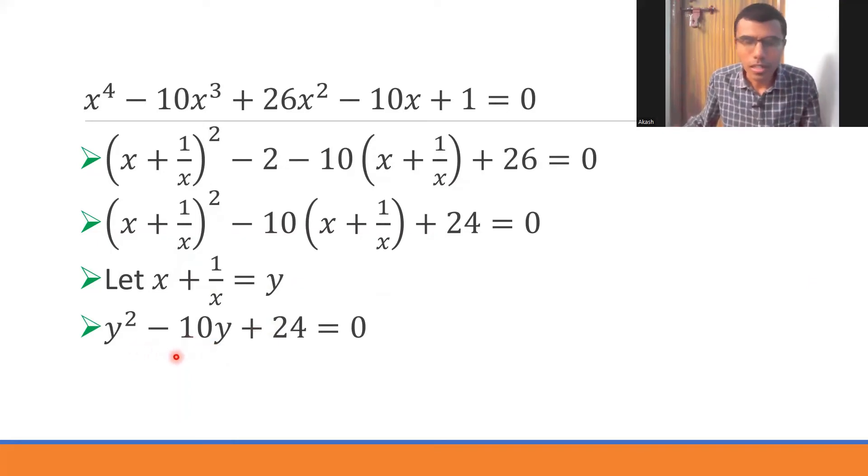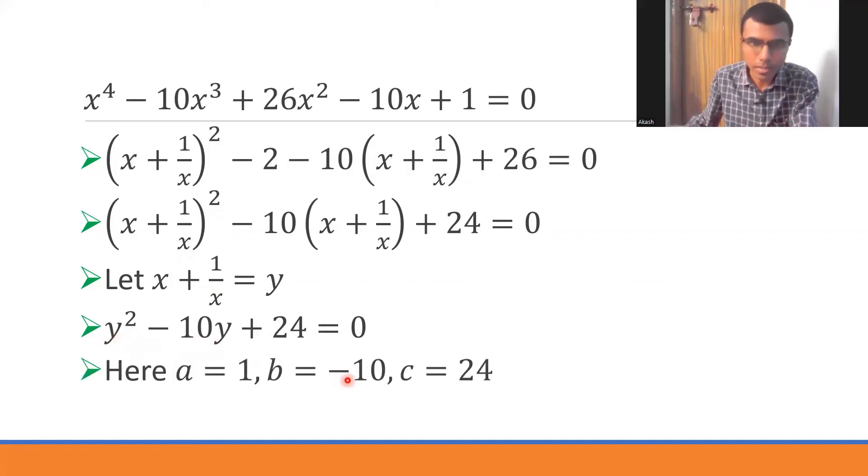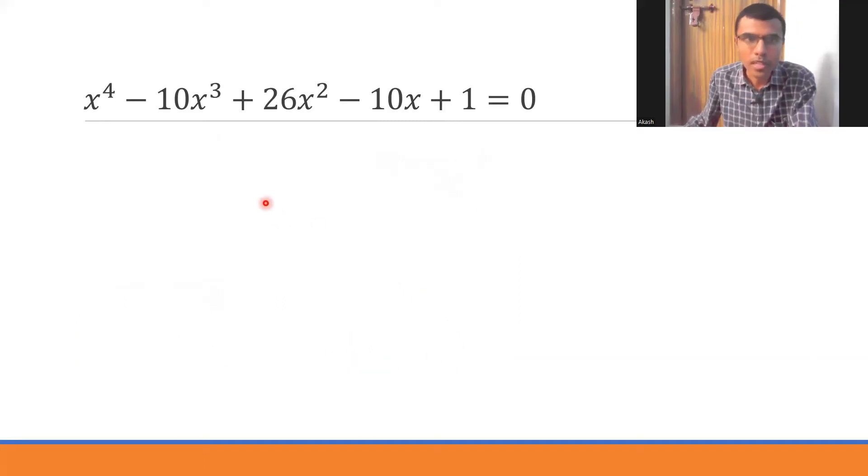Now it is very easy to solve. I am going to use a formula method. Now here a equals 1, coefficient of y² is 1, coefficient of y is -10, b is -10 and c is 24. Standard formula: y = (-b ± √(b² - 4ac))/2a.